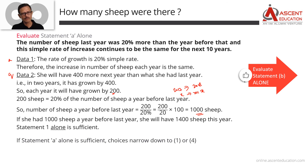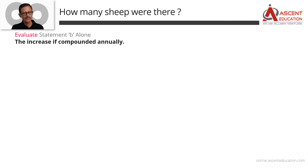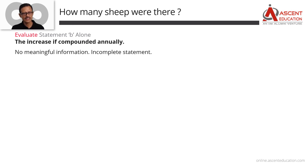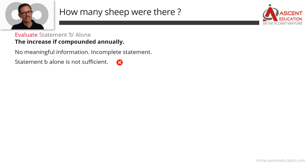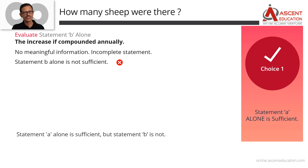Now let's evaluate Statement B alone. Statement B says the increase is compounded annually, but the statement is incomplete — there is no percentage given. So Statement B alone is not sufficient. Therefore: A alone is sufficient, B alone is not sufficient — Answer choice 1 is the correct answer.